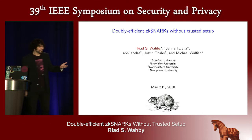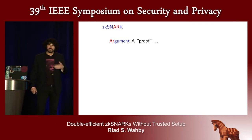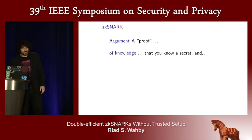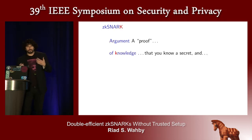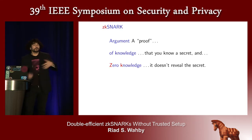To start, let's dissect this jargon. What is a ZK snark? Well, it's an argument, which is to say it's a proof, but it depends on a cryptographic assumption. And further, it's an argument of knowledge. That means essentially you can use it to prove that you know a secret. And since it's zero knowledge, when you prove that you know a secret, you don't reveal anything about that secret.